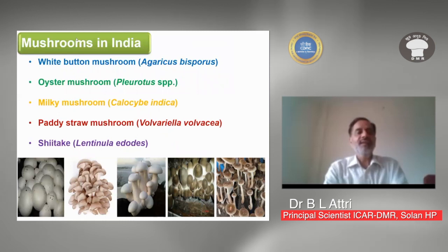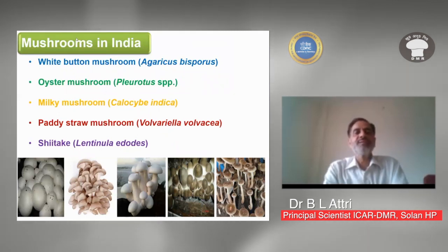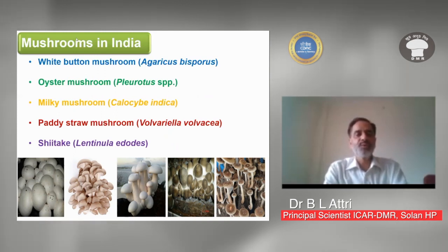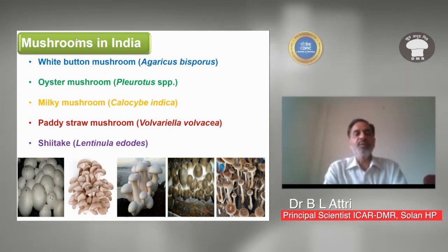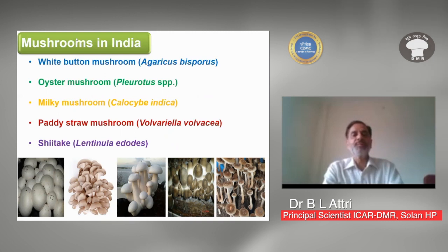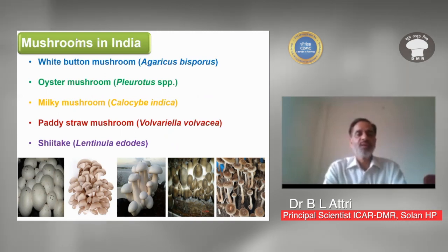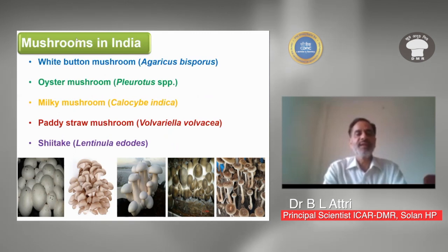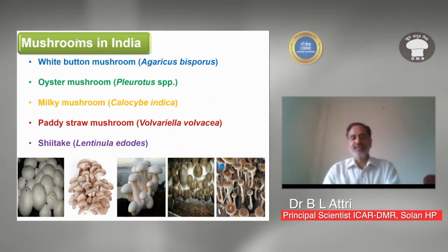In India, five mushrooms are cultivated on a commercial scale: white button mushroom, oyster mushroom, milky mushroom, paddy straw mushroom, and shiitake mushroom. Out of the total production, about 72 to 73% is formed by white button mushroom, followed by oyster mushroom, milky mushroom, paddy straw mushroom, and a very small quantity by shiitake mushroom.